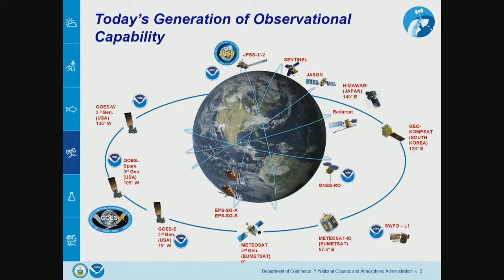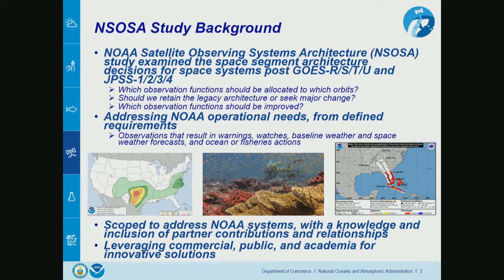We know these won't last forever, and the development time for GOES took on the order of 13 years from initial conception to first launch of GOES-R. So if the availability of current systems starts to decline in the 2030 to 2035 timeframe, we need to start working on next systems right now. We started a study about three years ago — the NOAA Satellite Observing Systems Architecture Study — to examine the space segment architecture with a fresh sheet of paper, see what functions could be allocated to what orbits, and determine what new types of measurements we want to make.